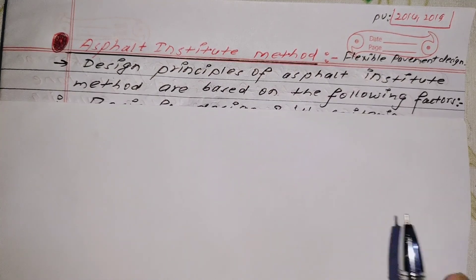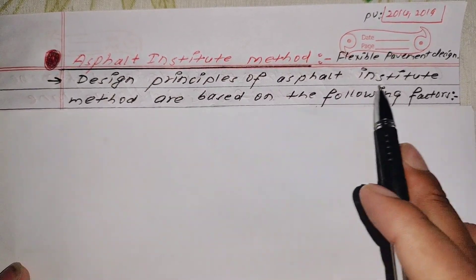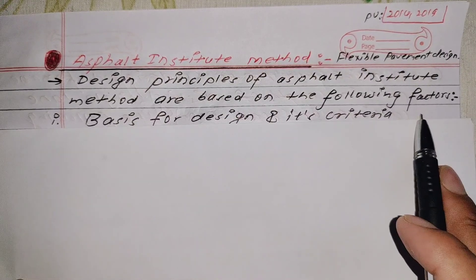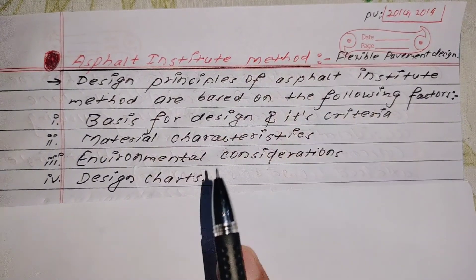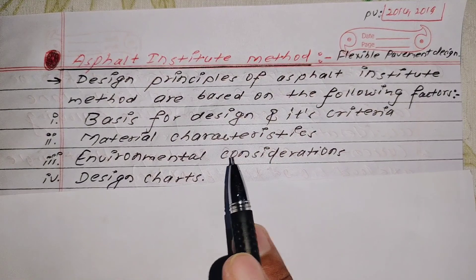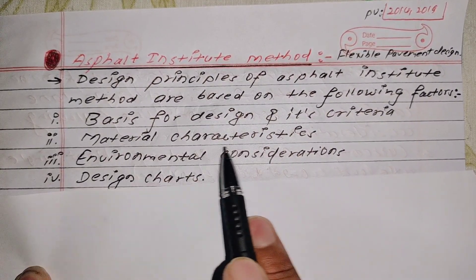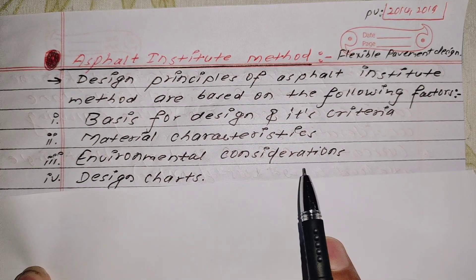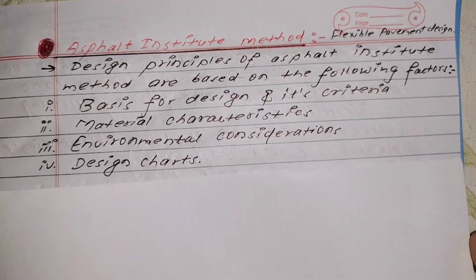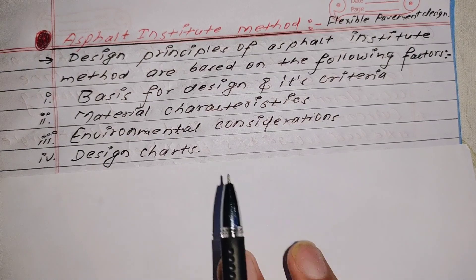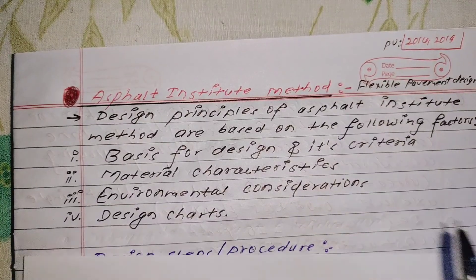The design principles of the Asphalt Institute method are based on the following factors: basis for design, its criteria and material characteristics, environmental consideration, and design charge. These are the four factors on which the Asphalt Institute method bases its design. Now we go into the Asphalt Institute method design procedure steps.